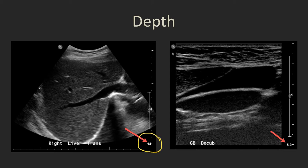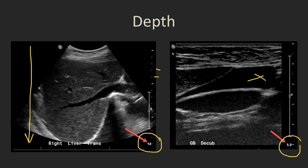In this case the field of view is 14 centimeters and each of the little markers here is one centimeter. Because here we want to get an image of the entire liver, we need a large depth or large field of view. On the right, we're just looking at the gallbladder, which is a more superficial organ. We've also got a little fluid here, so we want a much smaller depth — in this case five centimeters — and each of the tick marks is half a centimeter. You may need to alter this dynamically through the examination as you move from imaging one part of an organ to another.